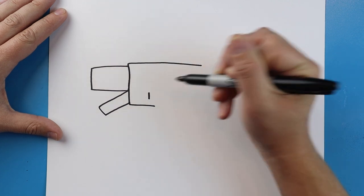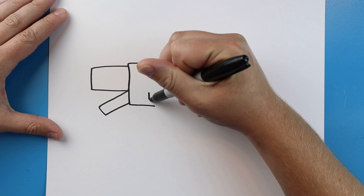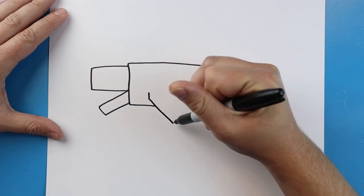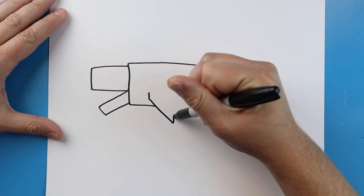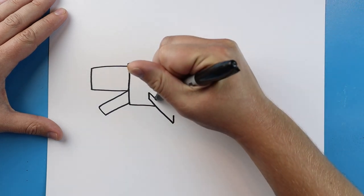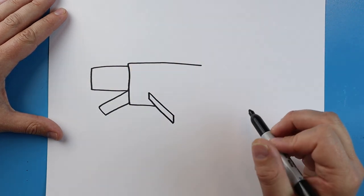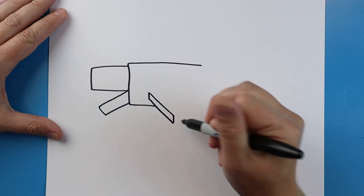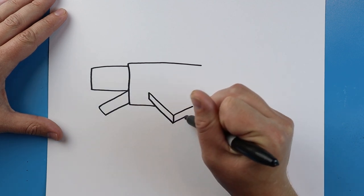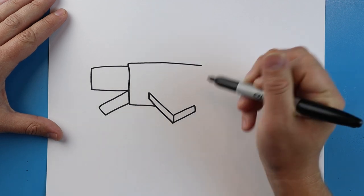Starting here, I'm going to draw a little line down and I'm going to draw a line that comes down here with a little line that comes up. Then I'll make another little line that comes down. We'll draw a line that goes over and another one that goes over and a line that comes down.